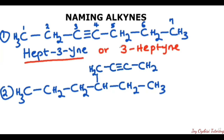So either form is the correct name for this first compound. For this second one here, when numbering this type of compound, we can see that this particular one has a branch — it is not a straight chain like the first one. Because of that, we are going to first consider the longest chain that includes the triple bond. Also, we are going to number so as to give our triple bond a lower number.